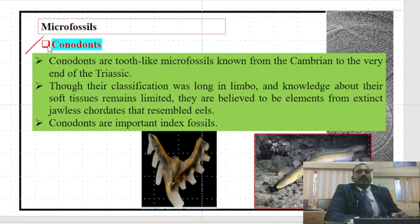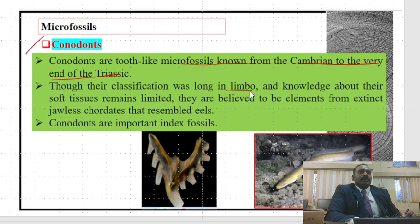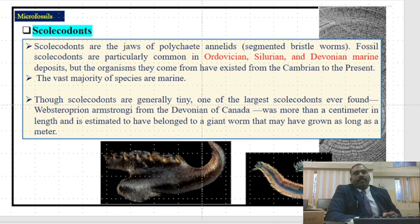The next microfossil is conodonts. Conodonts are tooth-like microfossils known from the Cambrian to the very end of the Triassic. Though their classification was long in limbo and knowledge about soft tissue remains limited, they are believed to be elements of extinct jawless vertebrates that resembled eels. Conodonts are important index fossils.